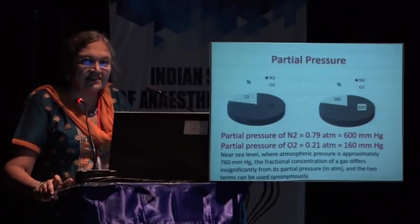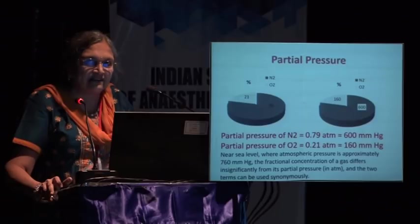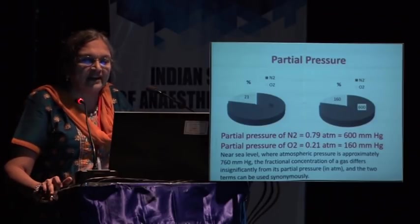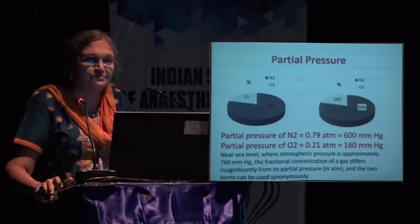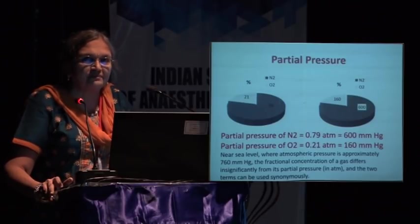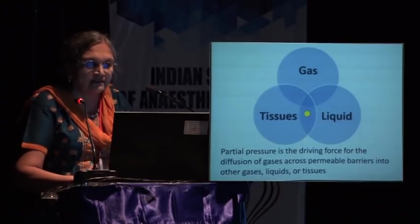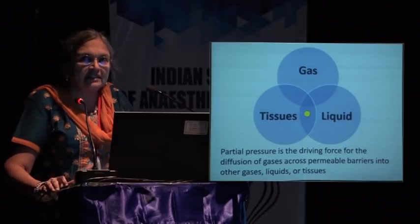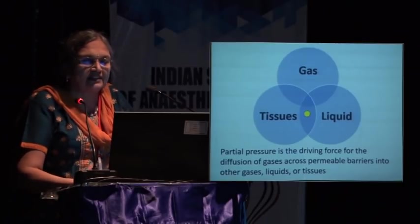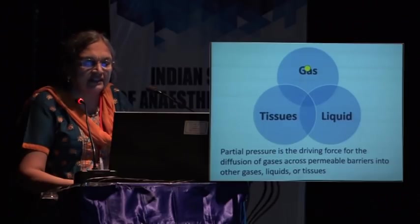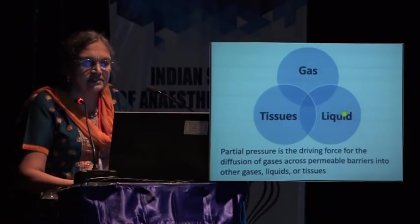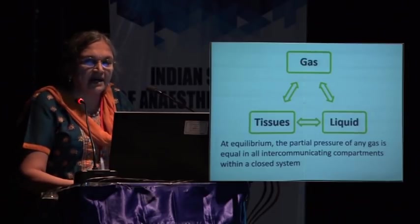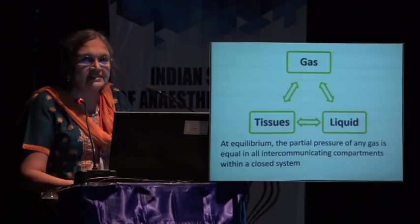At 760 mmHg atmospheric pressure at sea level, the partial pressure of nitrogen is 0.79 atmosphere, meaning the fractional nitrogen concentration is 0.79. Oxygen at 0.21 atmosphere means fractional concentration of oxygen is 0.21. Partial pressure is the driving force for diffusion of gases across permeable membranes into other gases, liquids, or tissues. At equilibrium, the partial pressure of any gas is equal in all intercommunicating compartments — gas, tissues, and liquid are interconnected.